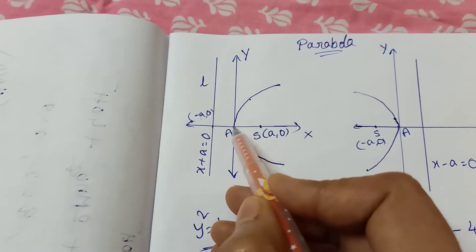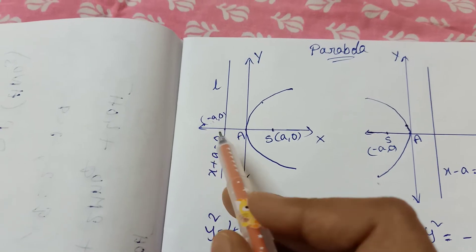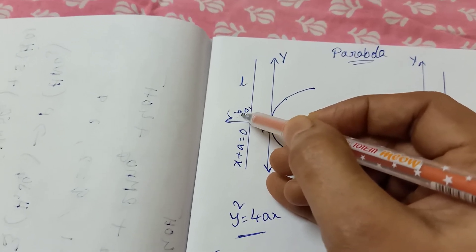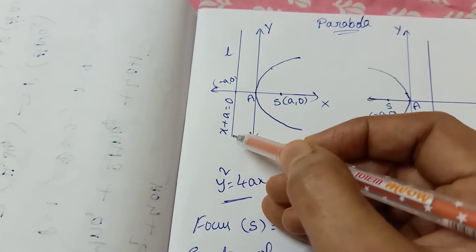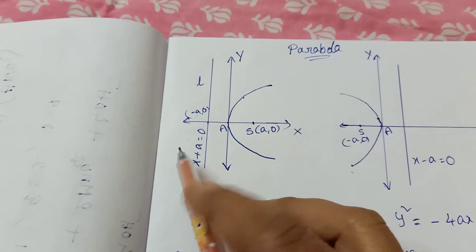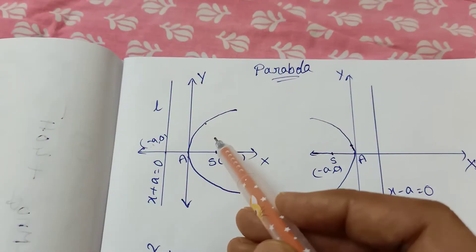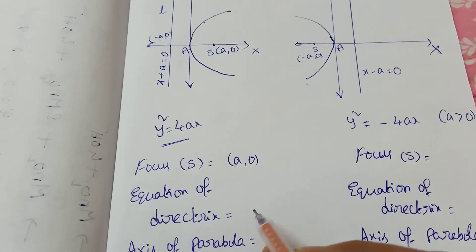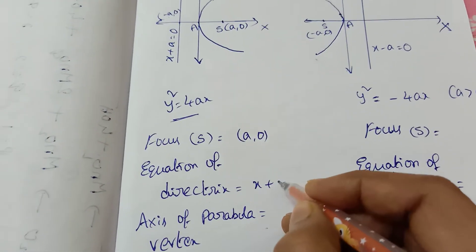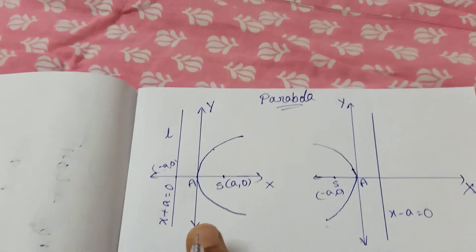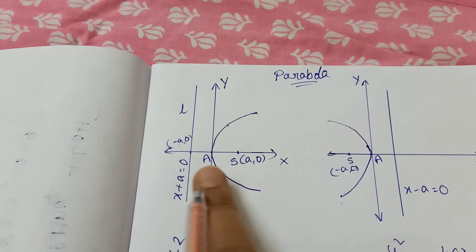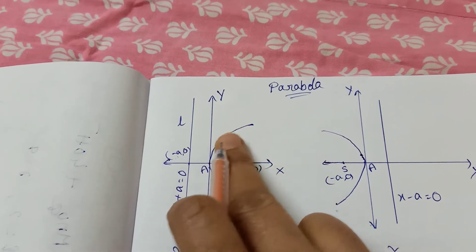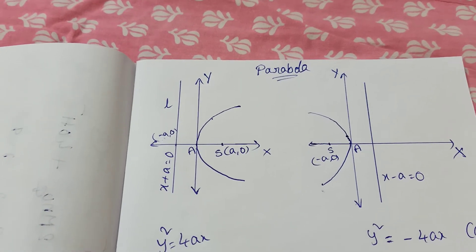The directrix is x plus a equals 0. The focus is at (a, 0). The axis of the parabola is x equal to 0. The vertex is at the origin (0, 0) — when y equals 0, the curve only touches the x-axis, so there is no y-coordinate. The vertex is (0, 0).